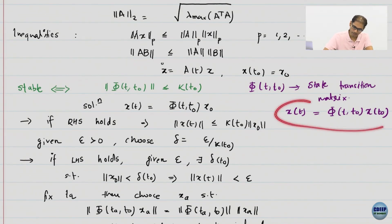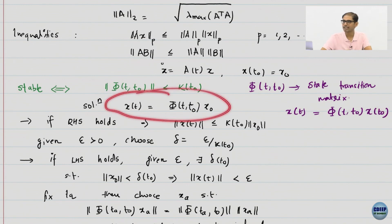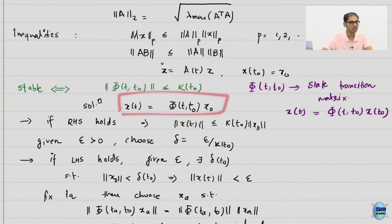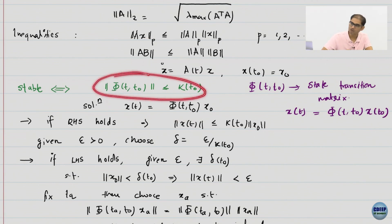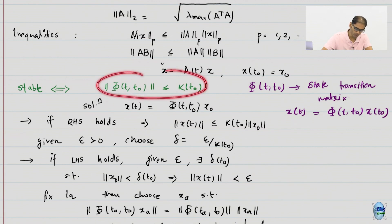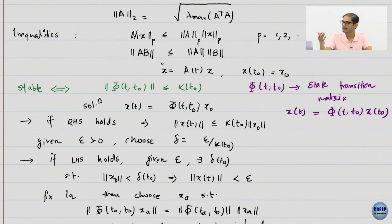The solution looks like this — this is how you write the solution for a linear system in terms of the state transition matrix, given initial condition x0. Let us start with assuming that the right-hand side condition is true. If this is true, we want to prove that the system is stable in the epsilon-delta sense that we just defined.